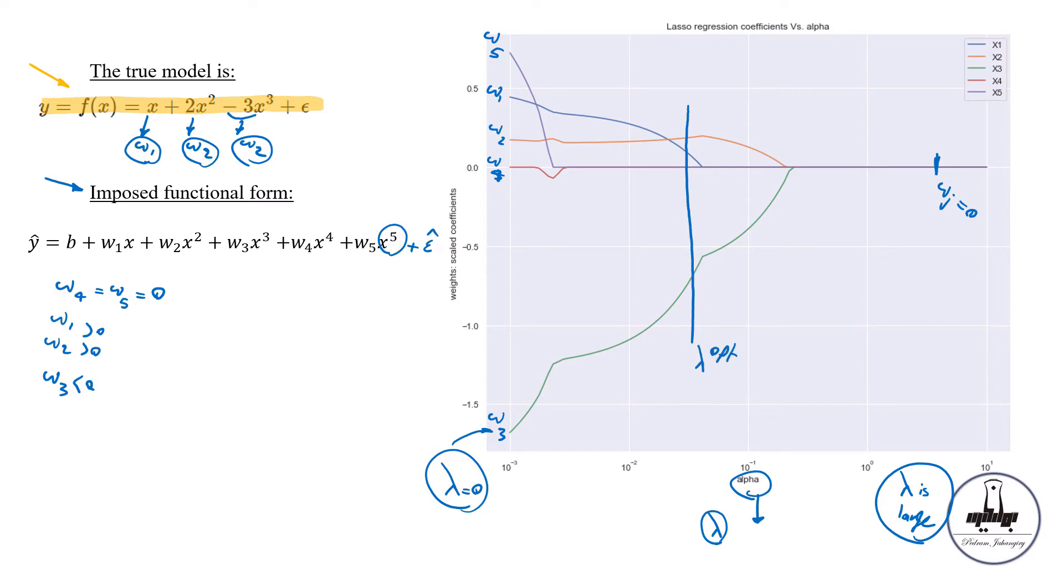And let's say, maybe it's somewhere around here. Maybe lambda is somewhere around here. So this is lambda optimal. In that case, so in lambda optimal, what is W4? Do you see a red color here? No, so it's 0. What is W5? Do you see a purple one here? No, it's 0. And this is our W3, which is a negative number. And these are our W2 and W1. So this is W2, W1. So it seems that Lasso is doing a better job compared to ridge regression because it is specifically forced W4 and W5 to be equal to 0. And we know that in the true relationship in the data, W4 and W5 were equal to 0.